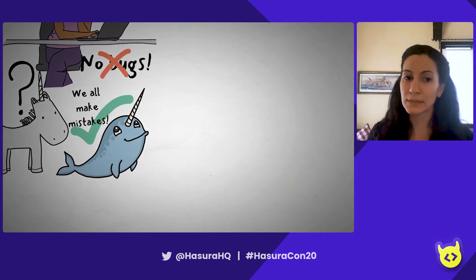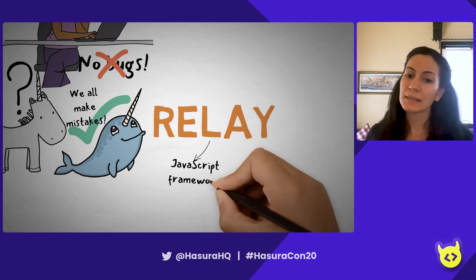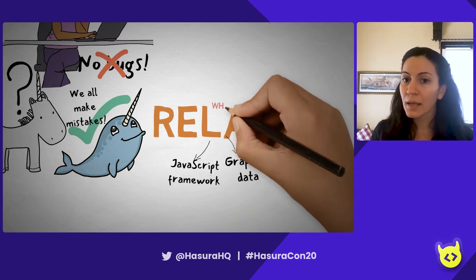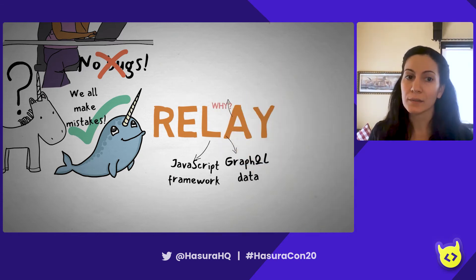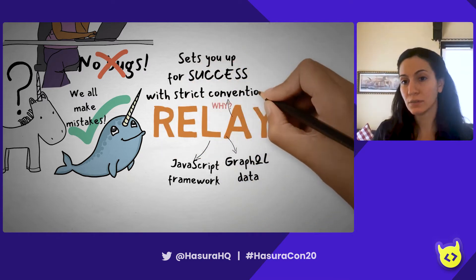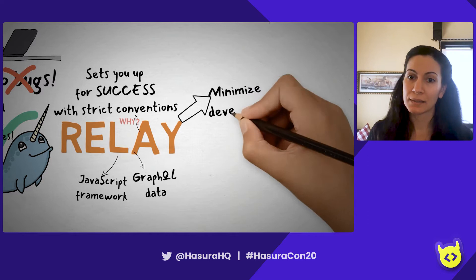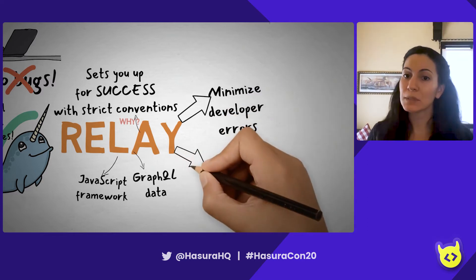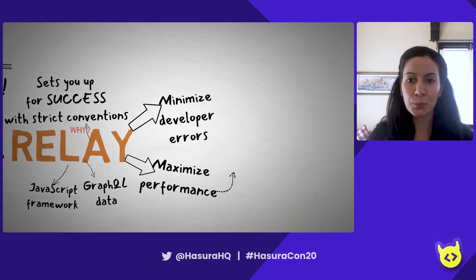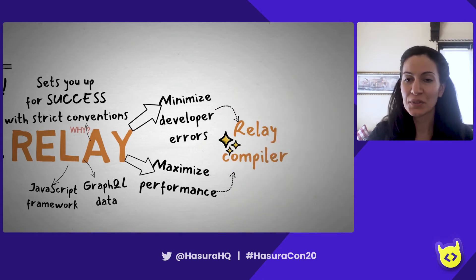So what does all of this have to do with Relay and Hasura? Well, Relay is a JavaScript framework for declaratively fetching and managing GraphQL data. And Relay knows that we all make mistakes and actually sets us up for success with strict conventions. The ways that Relay saves us from failing: one is minimizing developer errors and the other is maximizing performance. For both of these things, Relay uses the Relay compiler, which is the star of the show.